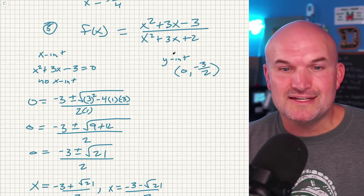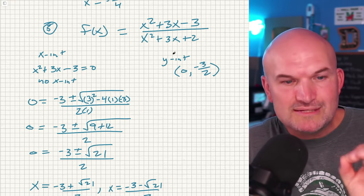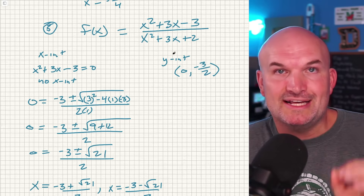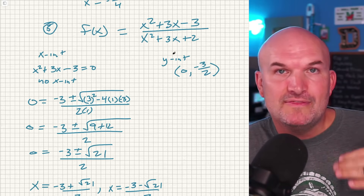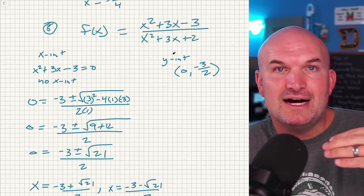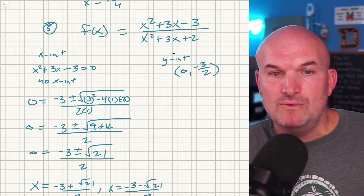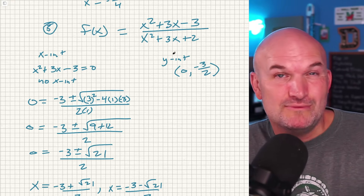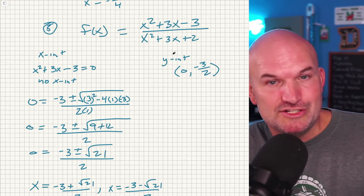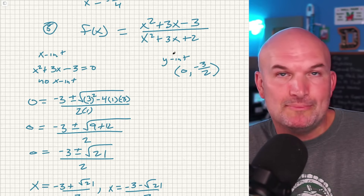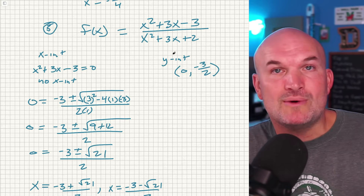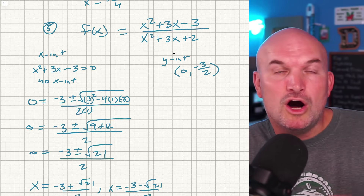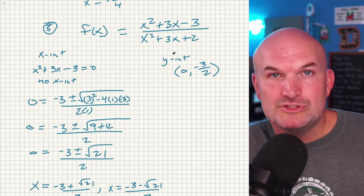Those are my top five mistakes when finding x and y-intercepts of rational functions. For more practice, check out the downloadable worksheet linked below. If you want to see more mistakes from the classroom or more examples on rational functions, check out the next video or the playlists down below. Cheers.